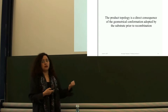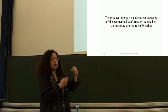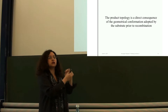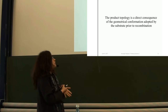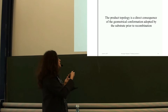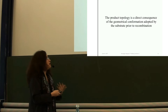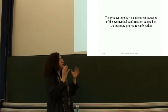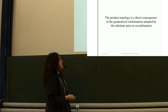From what we said yesterday, by local reconnection we understand the local action of the recombinases: cut, recombine, paste. Very easy — like local reconnection, very simple. But that's not enough to understand the global topological changes. Product topology is a direct consequence of the geometrical conformation adopted by the substrate. Substrate is what you started with prior to recombination. The way the embedding matters before reconnection will have a direct impact on the topology of the product.